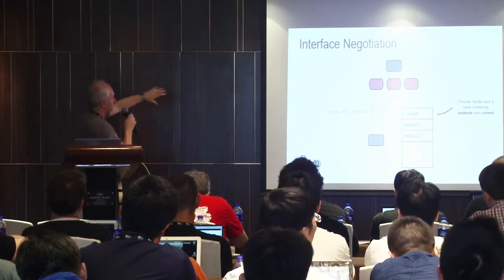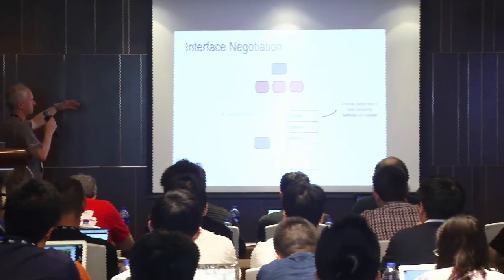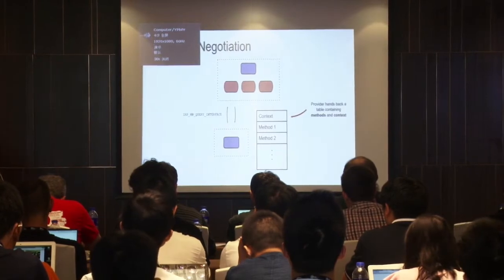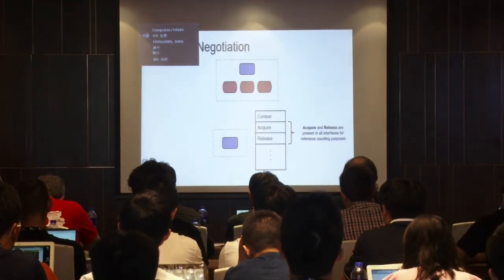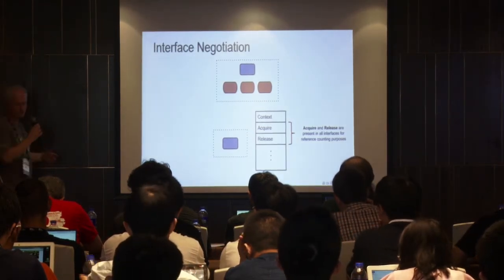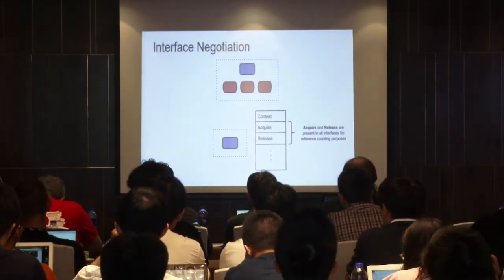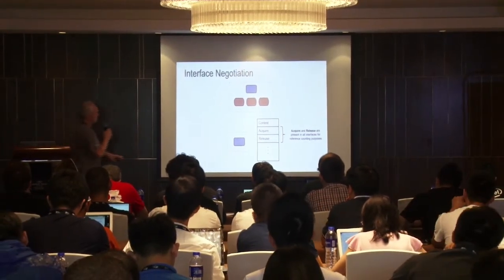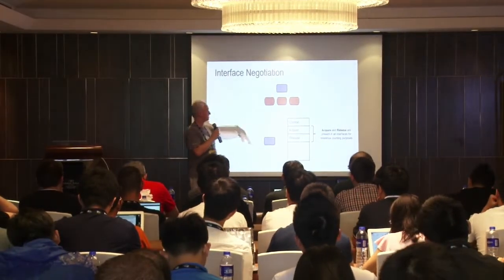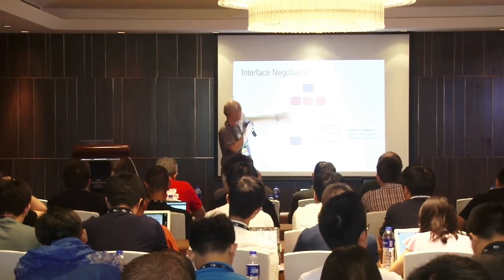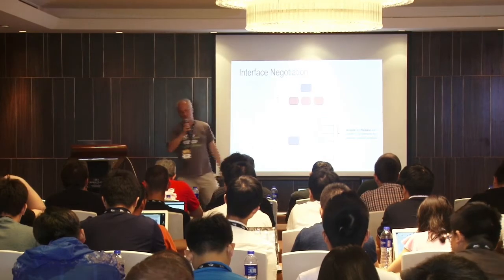When the provider gets this query, it sends back the jump table — a set of function pointers — along with some private context information the bus driver needs to do the right thing when it gets one of those method calls. There are two methods always supplied as part of any interface: acquire and release. These are used for reference counting, but not to reference count the actual interface structure itself. It's always safe to use these function pointers — this memory is never going to go away, because there's a parent-child relationship between these drivers. A parent driver can't be unloaded before the child driver has been unloaded.